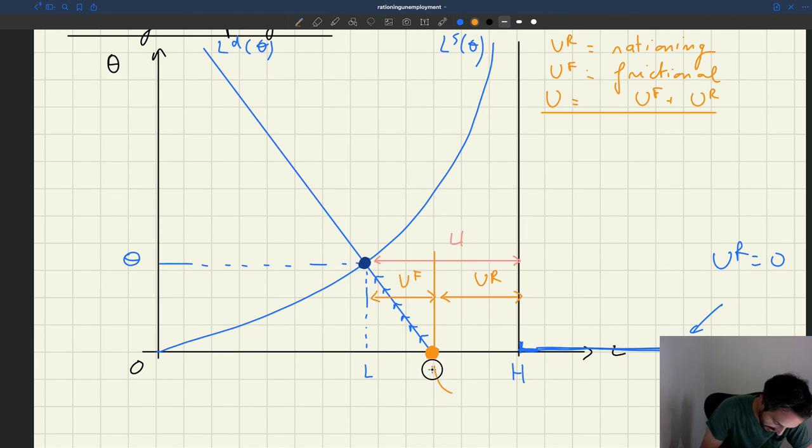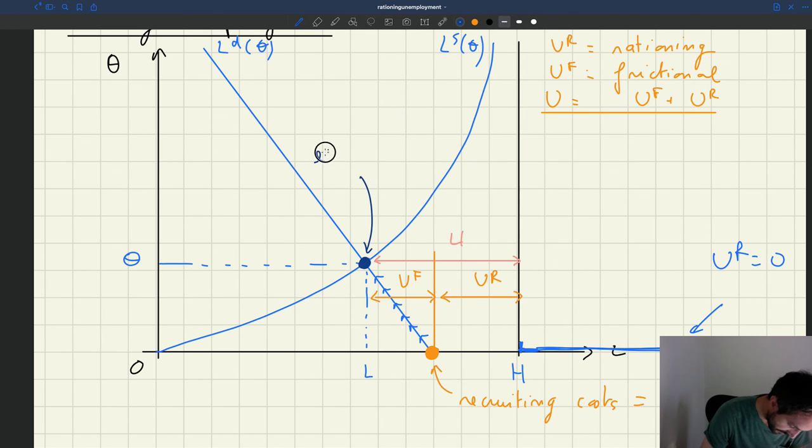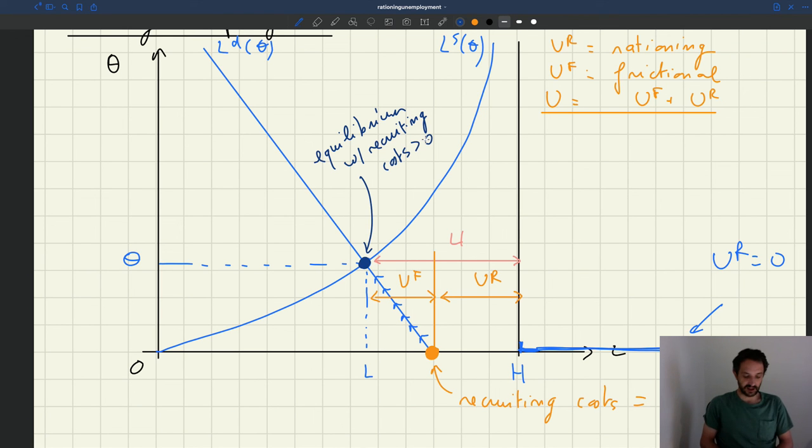So here, that point that we have here is what happens if recruiting costs are equal to zero, either because search effort is infinite or the recruiting cost parameter is actually equal to zero. And you can see that as the recruiting costs are in fact not zero, we move from that orange dot to the blue dot which is the equilibrium dot here. That's the equilibrium with recruiting costs positive. And as you can see that equilibrium has less employment than the place where recruiting costs are zero. This extra loss in employment, that's frictional unemployment.